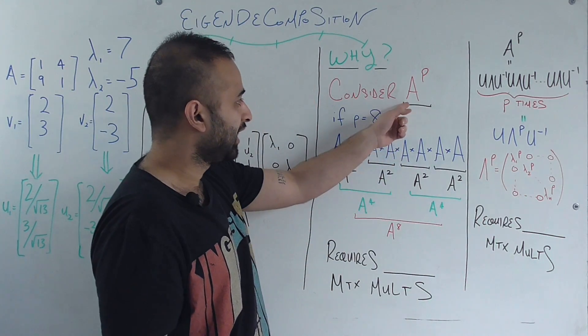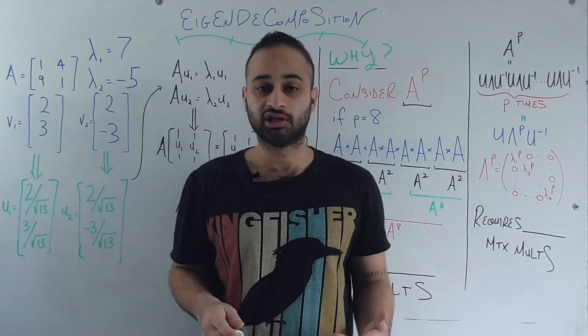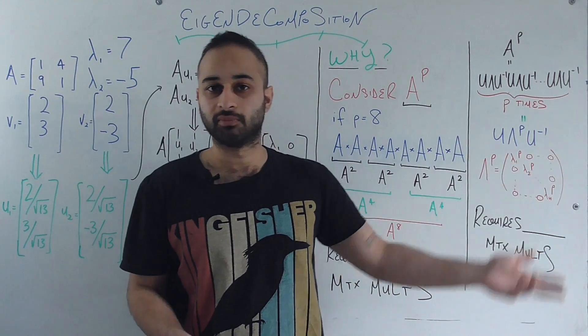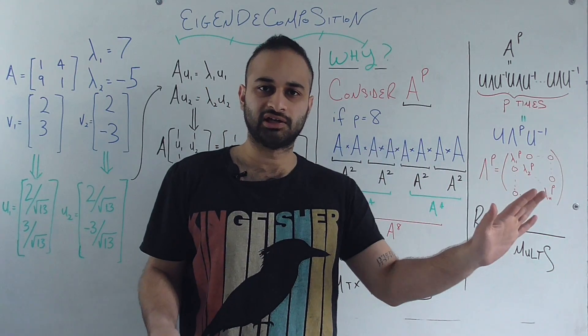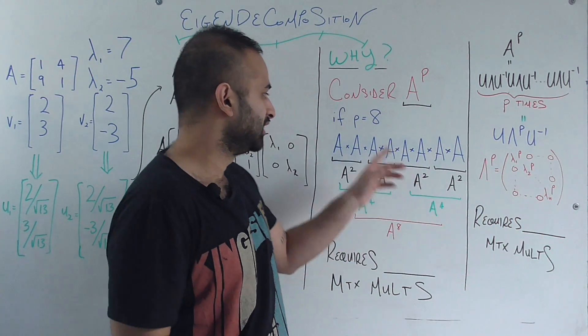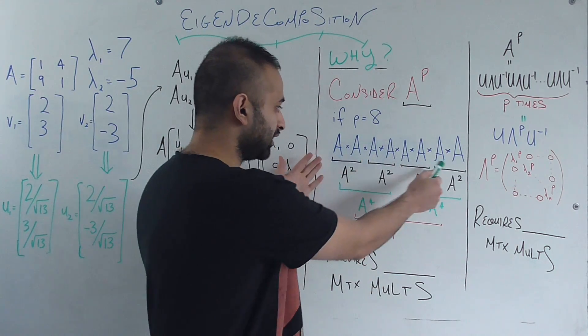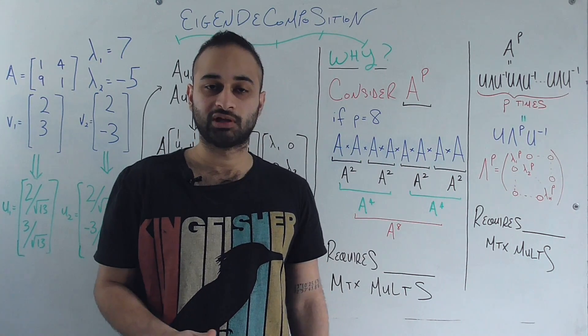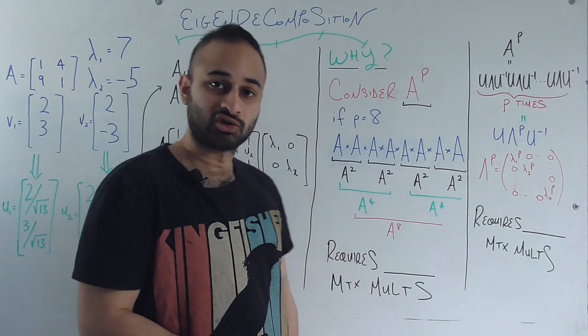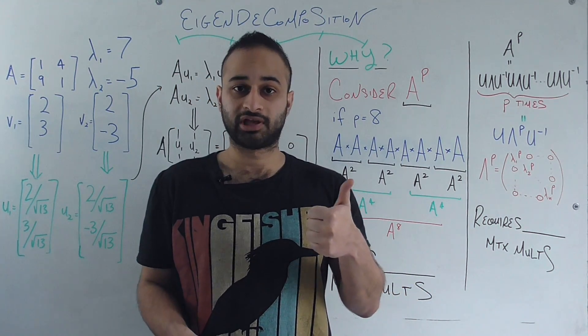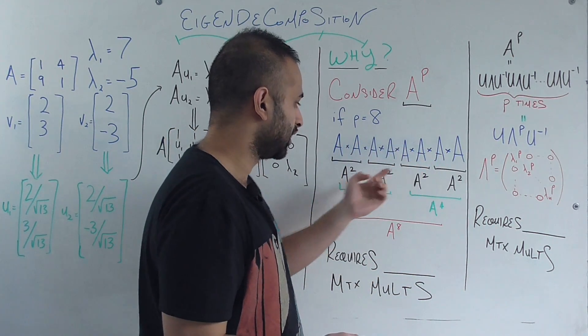So let's say we're trying to compute A, A again just being any square matrix that we have the eigendecomposition for. Let's say we're trying to do A to the power of some number P. Let's see what happens if we don't consider the eigendecomposition at all. So let's just say that P is equal to eight. So we're trying to find A to the power of eight. I've actually explicitly written out eight A's here. And let's think about how we would do it, being a little bit smart about it. So we could first compute A squared. That's one matrix multiplication we just have to do. And now we can do that for this pair, this pair, this pair, and this pair.